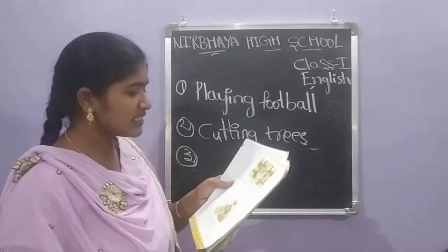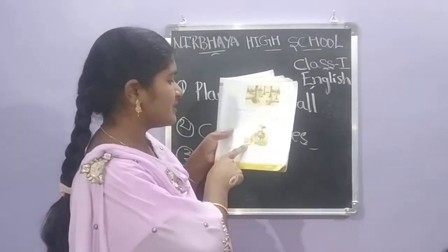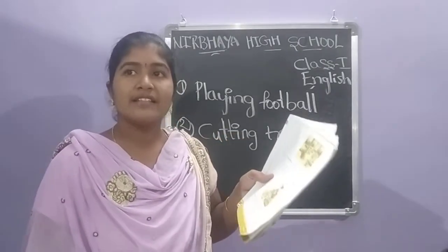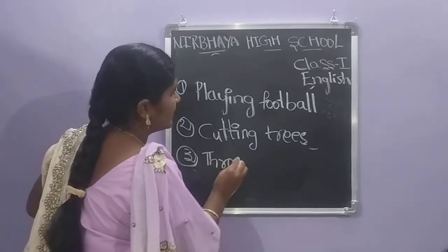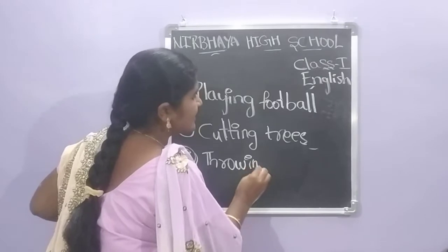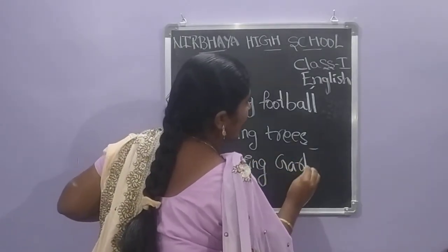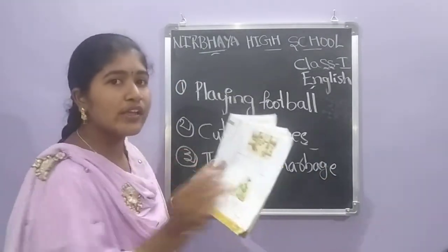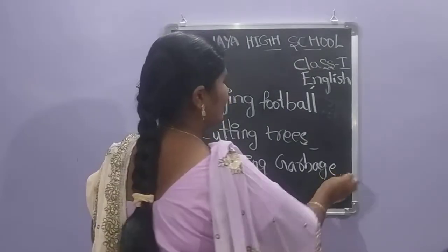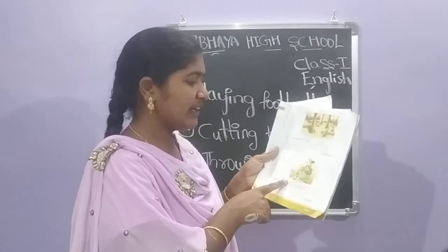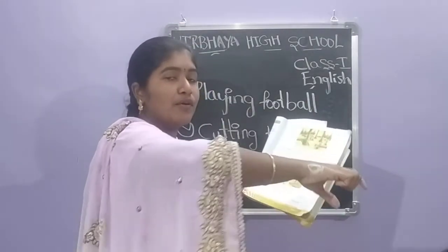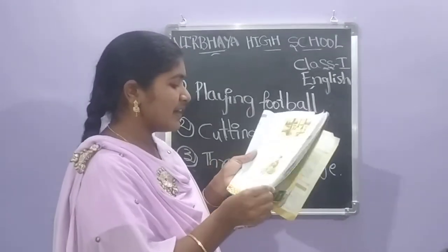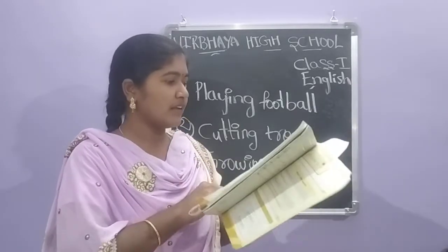Third one — observe the picture. What is the man doing? The man is throwing garbage. Throwing — T-H-R-O-W-I-N-G — garbage — G-A-R-B-A-G-E. Garbage means dust. The man is throwing the garbage in the river.